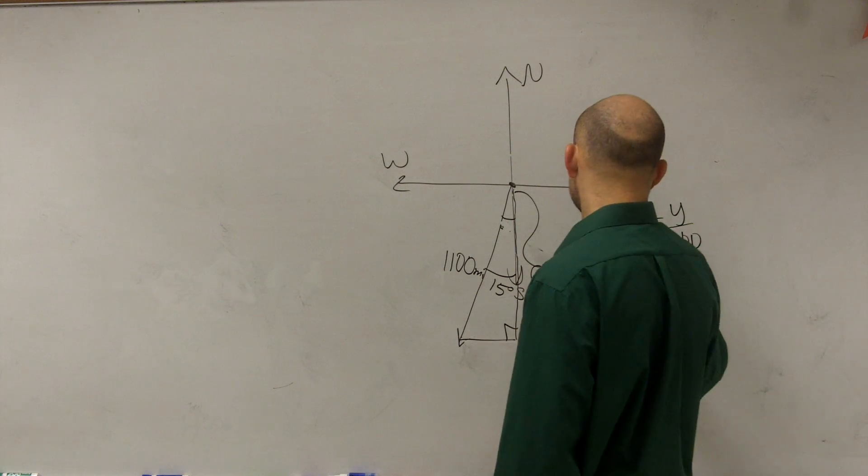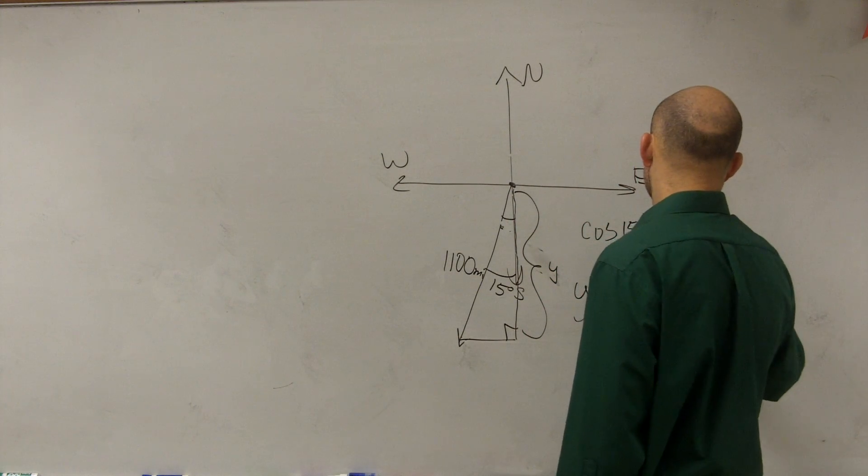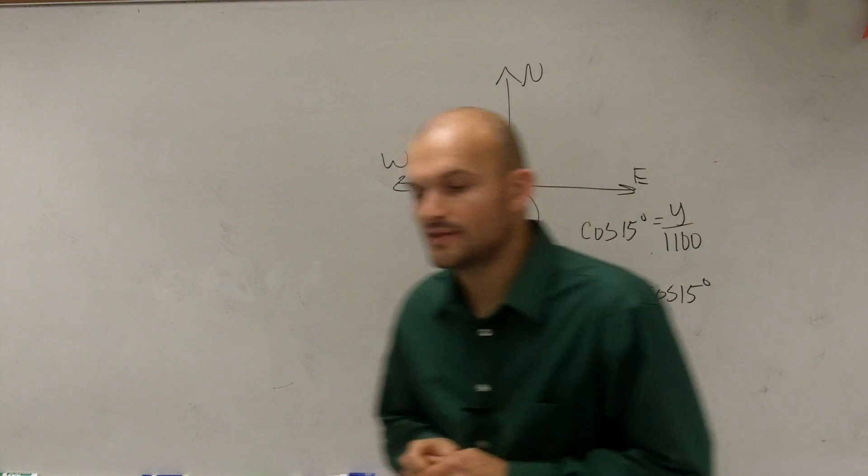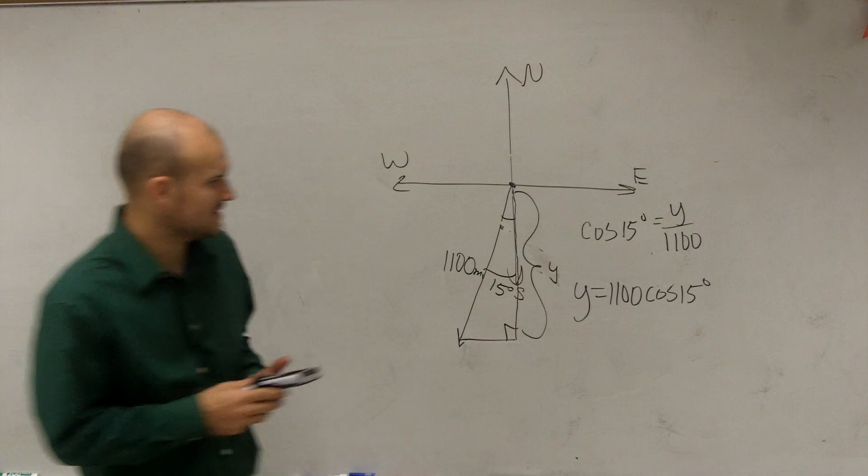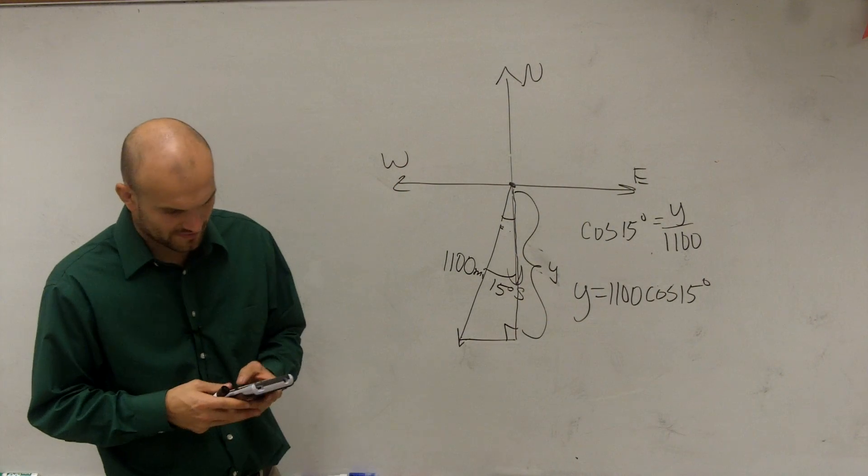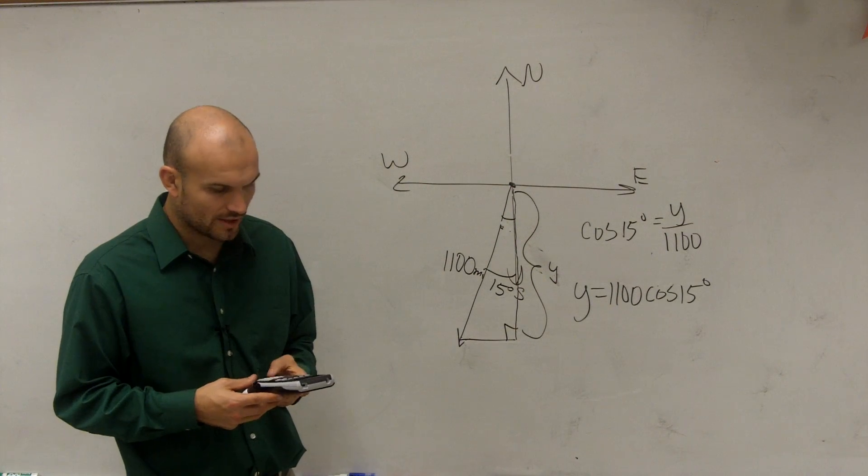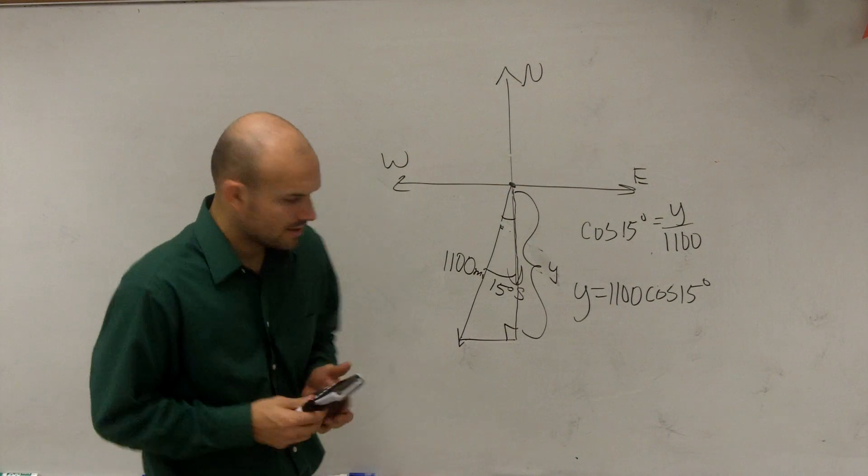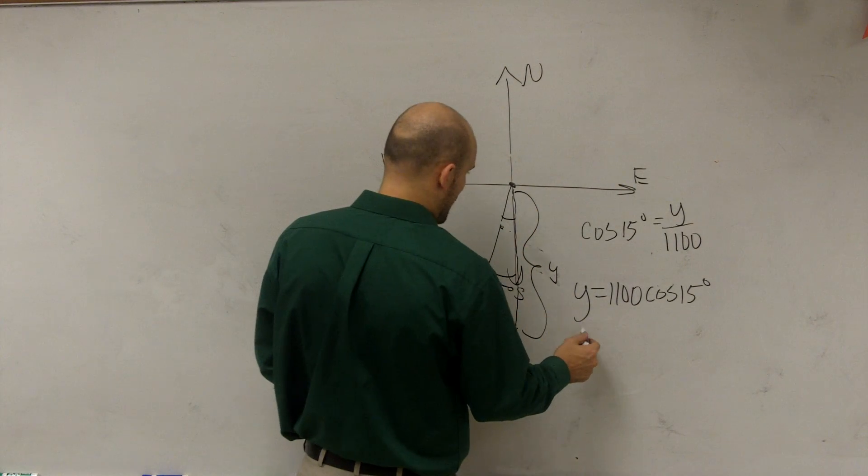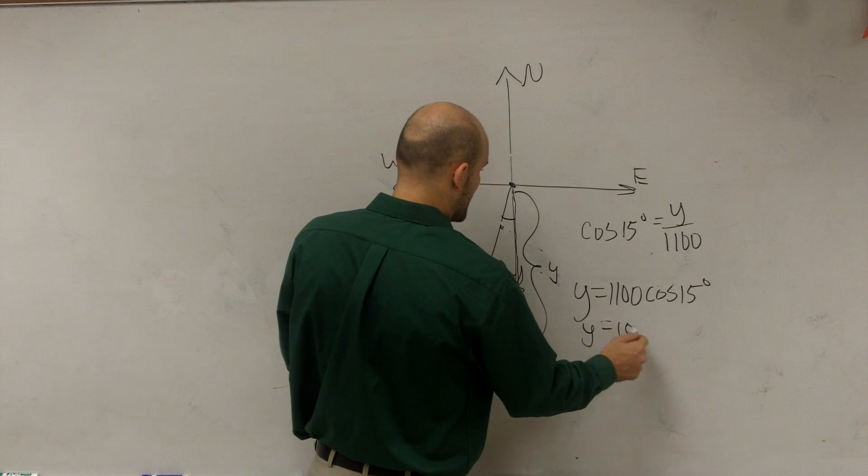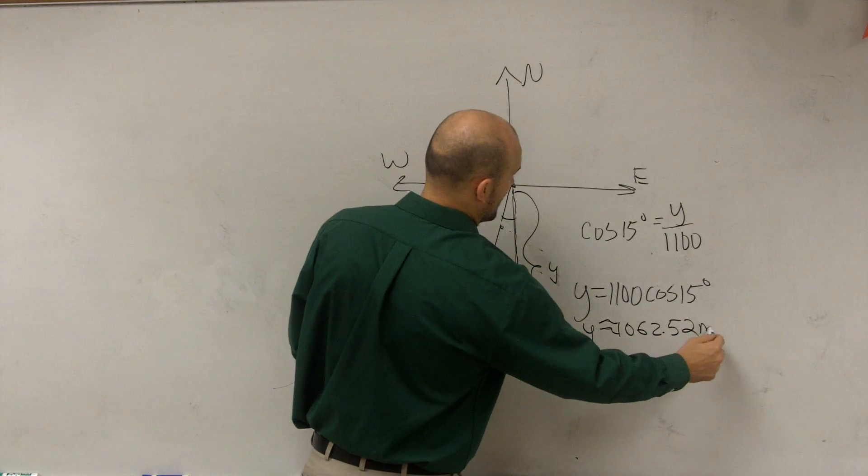Therefore, Y equals 1,100 times cosine of 15 degrees. So therefore, to find the rest of that problem, all you're simply going to do cosine of 15 degrees. So you're going to write cosine of 15 degrees times 1,100. And therefore, you can say that the distance, which is going to be in miles, Y equals 1,062.52 miles.